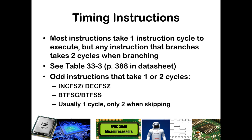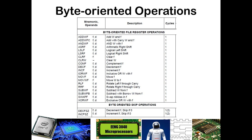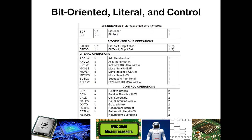The same is true for bit tests. If we do a bit test skipping if clear or skipping if set, in the instance where it does skip that takes two cycles, but if it's just a bit test and falls through to the next command, that is one cycle. Here is a reproduction of a portion of that table showing our byte-oriented operations. Almost all of these are one cycle commands — addition, clear, complement, and other operations each take one instruction cycle when executed once. The decrement and increment are listed as one with two in parentheses because nominally they are one cycle, but when the result is zero and it skips, that will be a two cycle command.